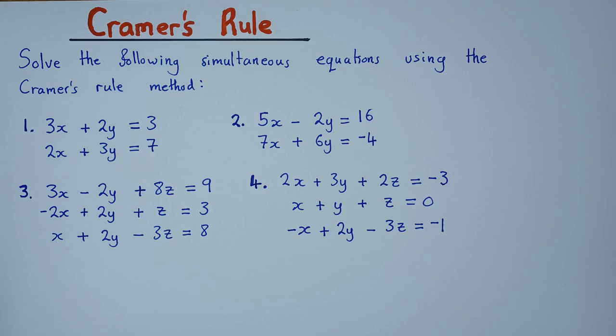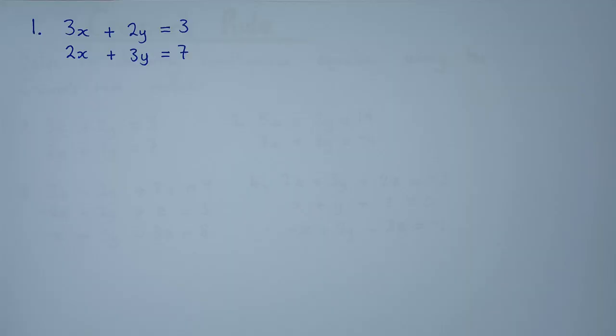We have some examples: the first two examples represent a 2x2 system with two variables, and the next two examples represent a 3x3 system with three variables. Let's start with the 2x2 examples.